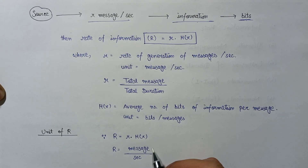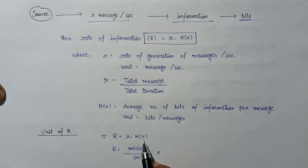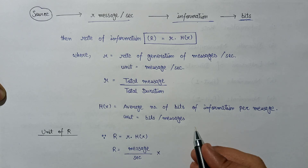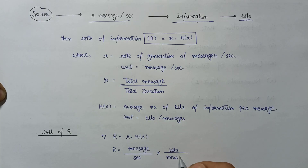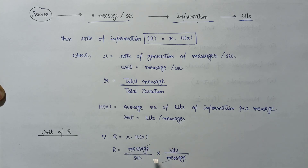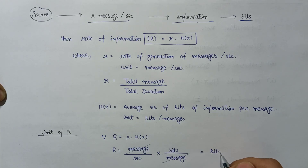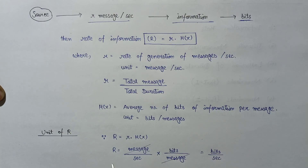Similarly, multiplying by the unit of H(x), which is bits per message — the 'message' in the numerator and denominator cancel out — and we get the final unit of R as bits per second.